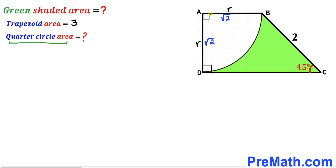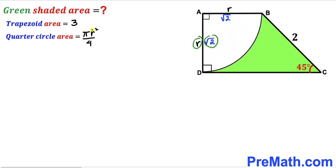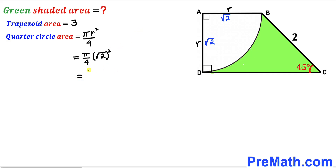Now we calculate the area of the quarter circle. Recalling that the area of a full circle is πr², the area of a quarter circle is πr² / 4. Our radius r = √2, so we get π × (√2)² / 4 = π × 2 / 4 = π/2 square units.